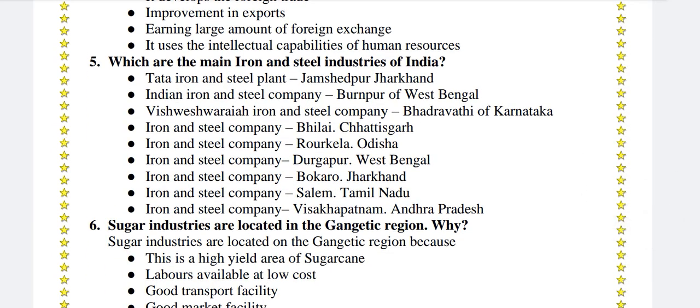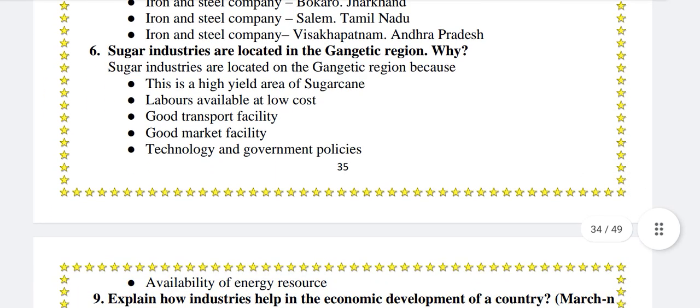Which are the main iron and steel industries of India? Tata Iron and Steel Plant, Jamshedpur, Jharkhand. Indian Iron and Steel Company, Burnpur, West Bengal. Vishweshwaraya Iron and Steel Company, Bhadravati, Karnataka. Iron and Steel Company, Bhilai, Chhattisgarh. Iron and Steel Company, Rourkela, Odisha. Iron and Steel Company, Durgapur, West Bengal. Iron and Steel Company, Bokaro, Jharkhand. Iron and Steel Company, Salem, Tamil Nadu. Iron and Steel Company, Visakhapatnam, Andhra Pradesh.